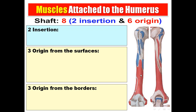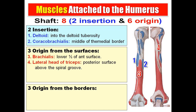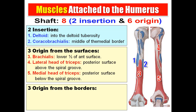Regarding the shaft of the humerus: there are two insertions and six origins — three from the surfaces and three from the borders. The two insertions are: deltoid into the deltoid tuberosity, and coracobrachialis into the middle of the medial border. Three origins from the surfaces: brachialis from the anterior surface; lateral head of triceps from above the spiral groove on the posterior surface; and medial head of triceps from below the spiral groove on the posterior surface.